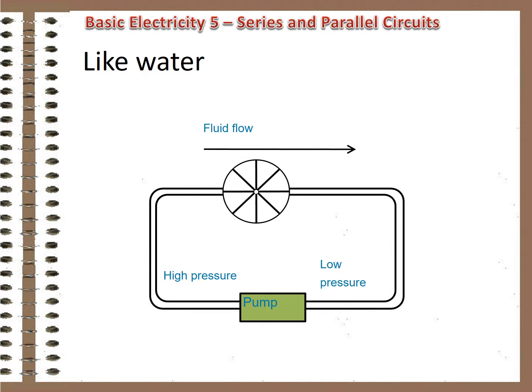The series circuit is much like a single path water circuit in this regard. If five gallons per minute leave the pump, there's five gallons per minute flowing everywhere in the system unless there's a leak. The same holds true for series electrical circuits.